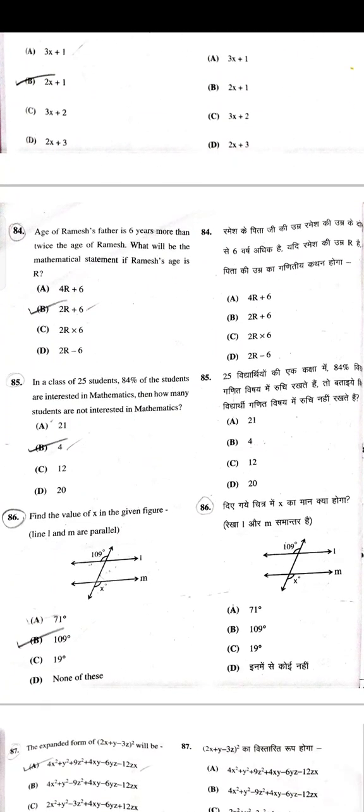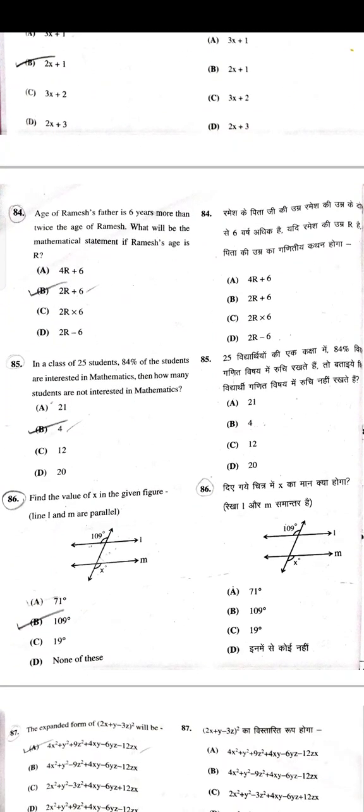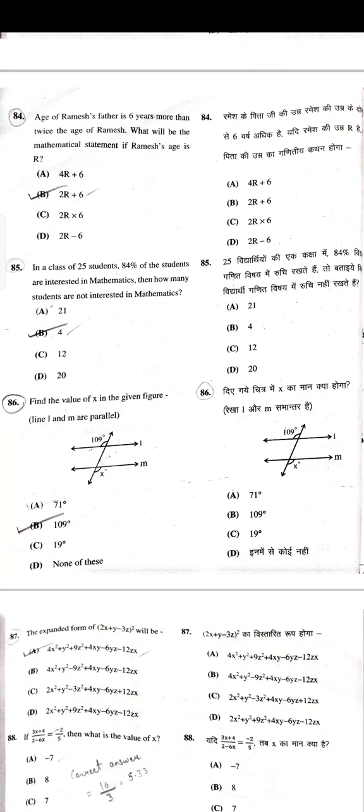Solving the fraction, 2/3 will be the answer. The value of (a+b)(a-b) is a²-b². 3x-1 is one factor of 6x²+x-1; the other factor is 2x+1. Age of Ramesh's father is 6 years more than twice the age of Ramesh; the mathematical statement if Ramesh's age is R is 2R+6.